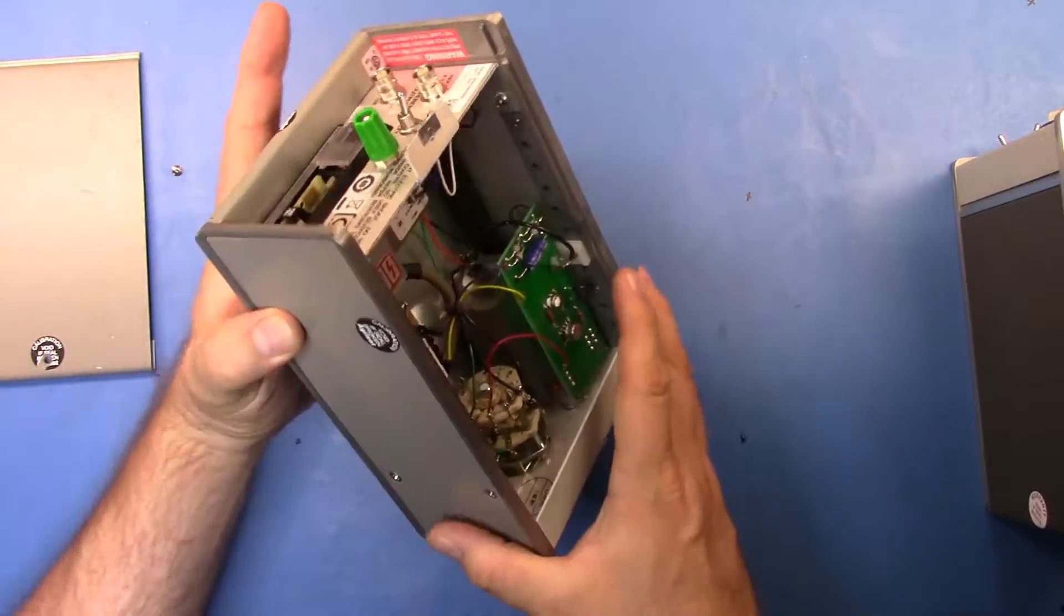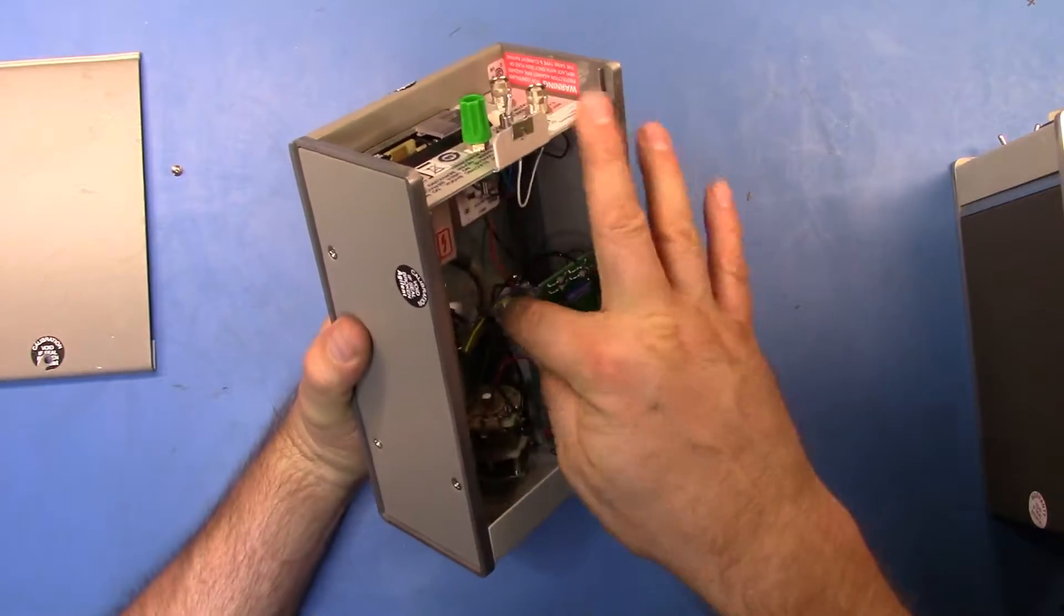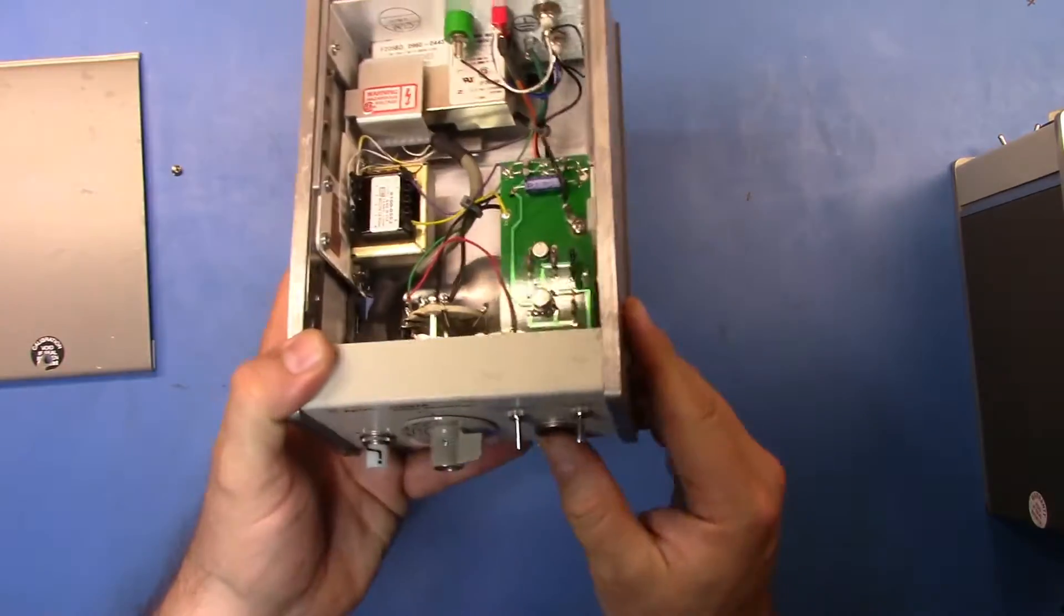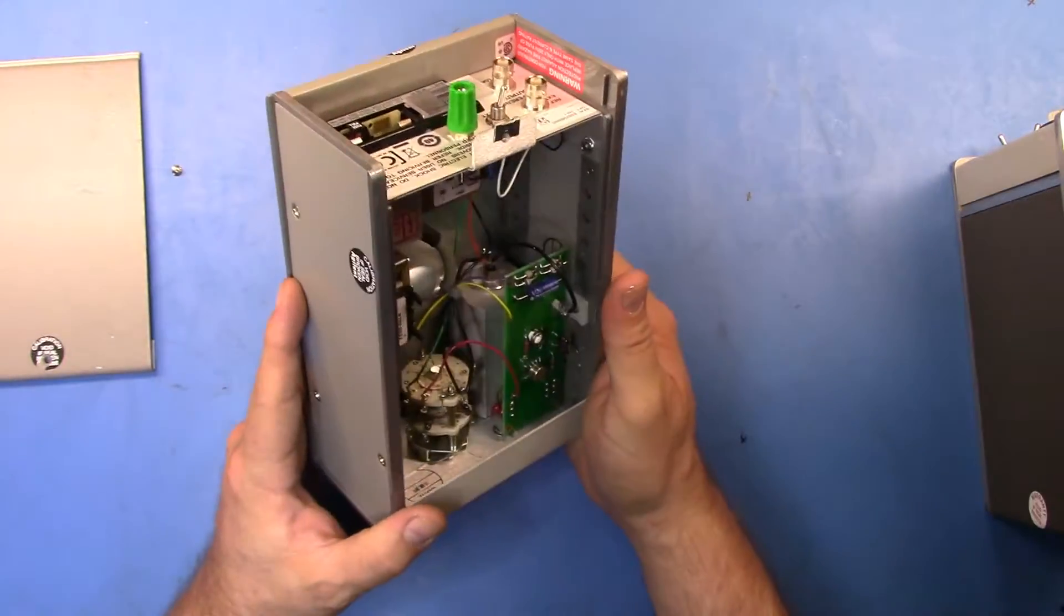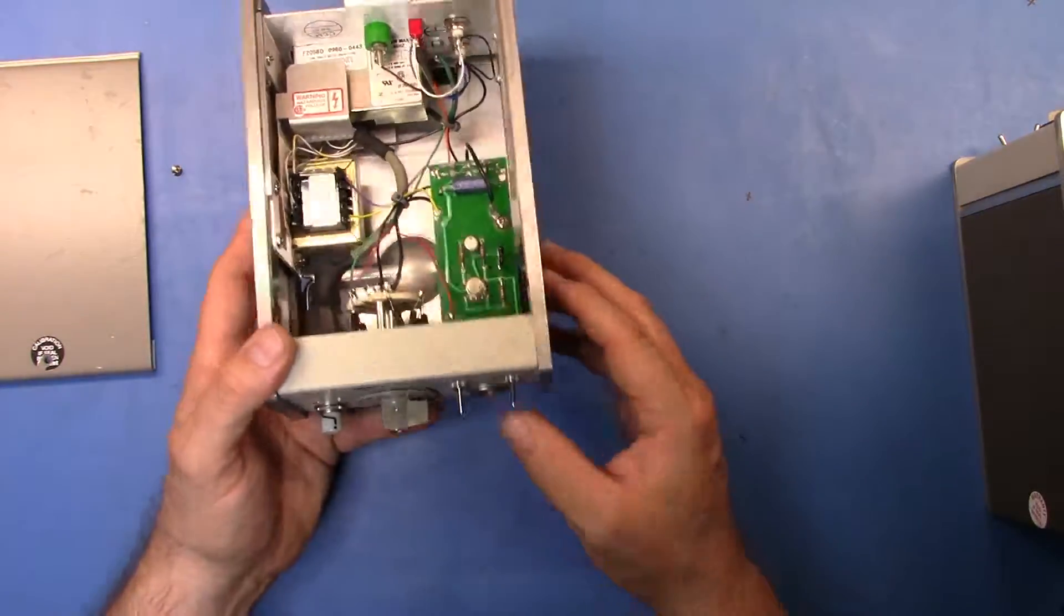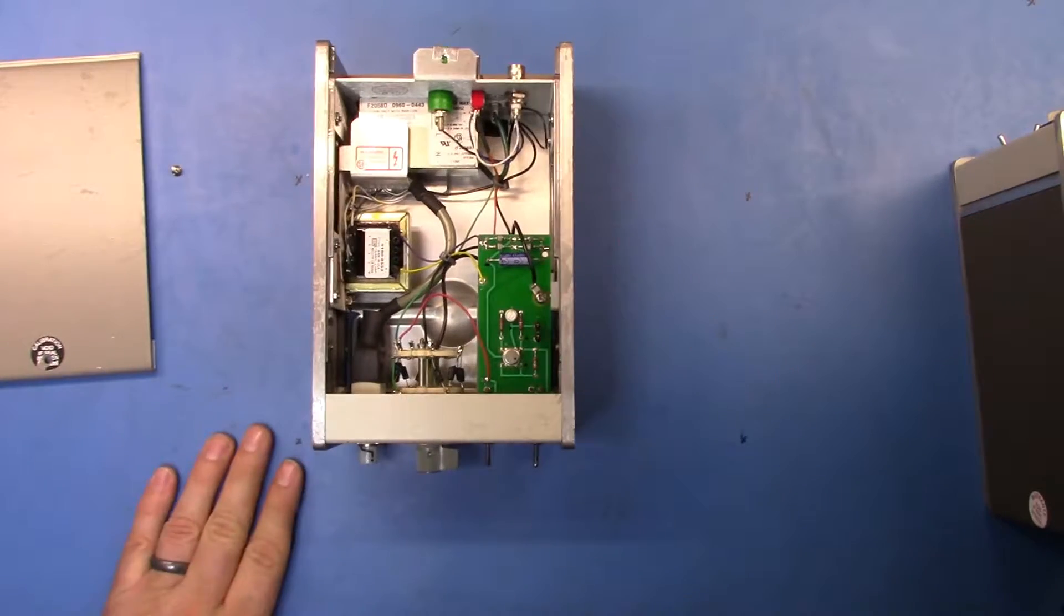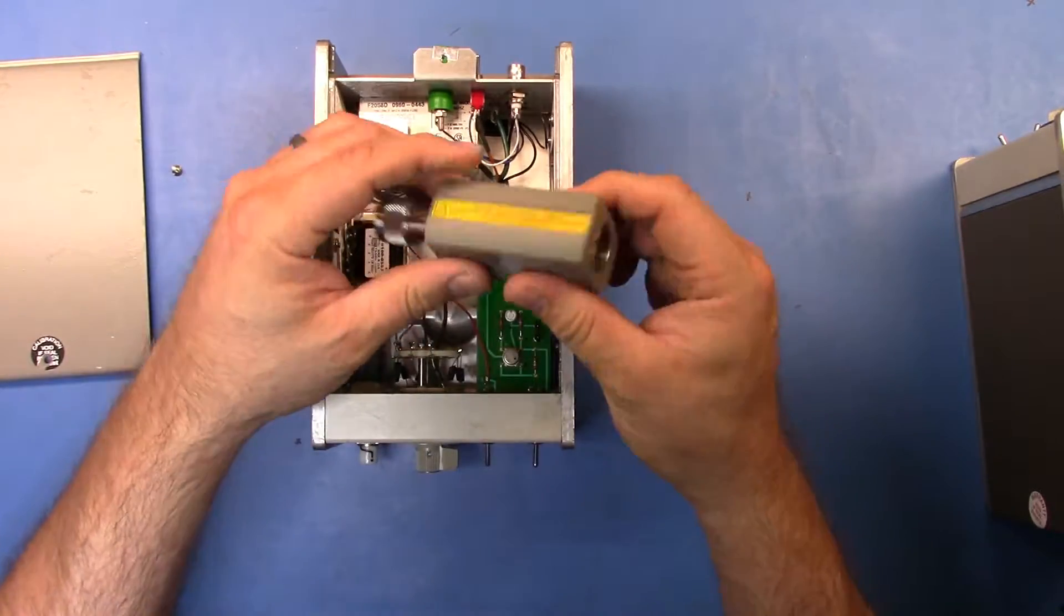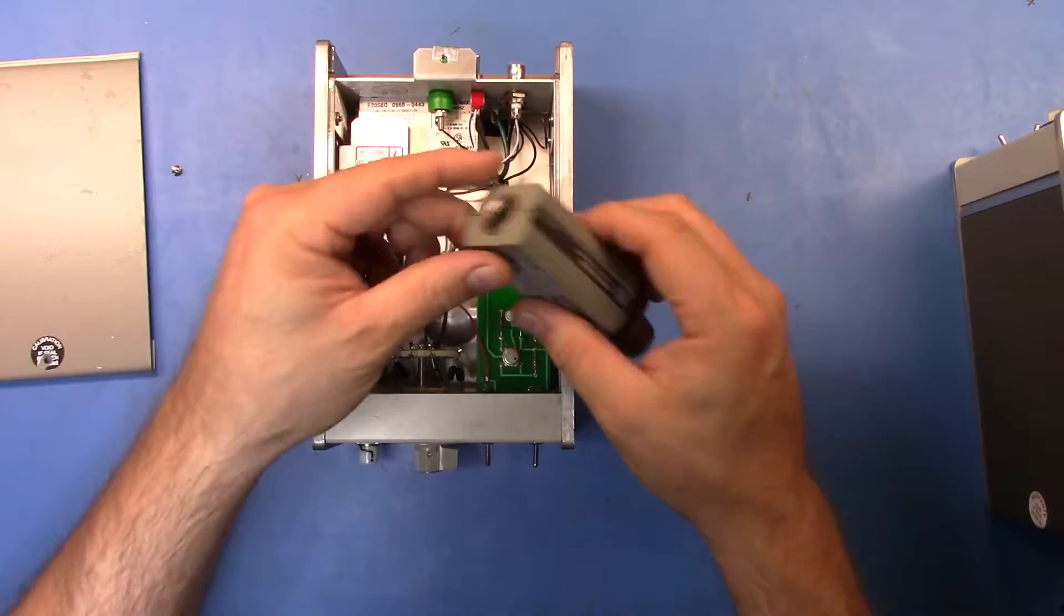And then underneath there if you look, you can see, and I don't know if I can get a good shot, but they basically have an 8480 series sensor body in there that's going to be used to provide the sensor. And so if you have a look at what one of those guys look like, here is an actual 8482 sensor that I have.